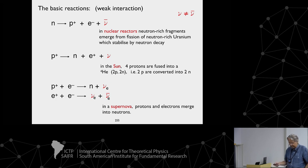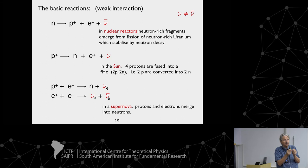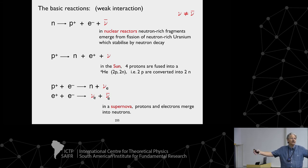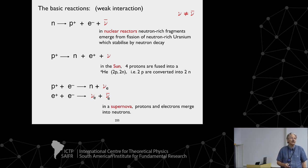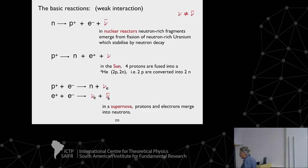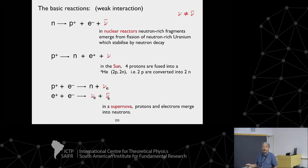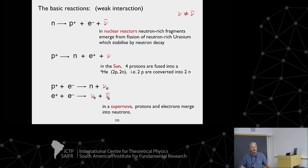With protons and electrons stabilizing a star we get stars like our sun, which are relatively big. Once they combine into neutrons we get a neutron star, which is much smaller. A one or two solar mass star with millions of kilometers in diameter can shrink to a neutron star of only 15 kilometers. Additionally, when there is a lot of energy, electron-positron pairs can interact and produce photons that decay into neutrino-antineutrino pairs.